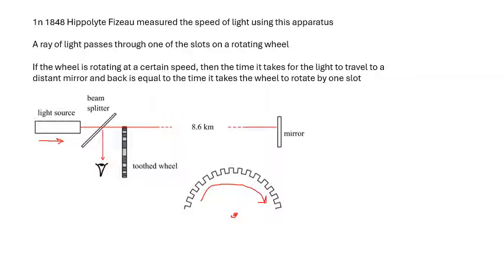The light goes through one of the slots, travels 8.6 kilometers, bounces off a mirror, and comes back again. If the wheel is rotating at just the right speed, the time it takes for the wheel to rotate one slot equals the time for the light to get there and back. So if you know the distance and how fast the wheel is rotating, you can work out the speed of light.